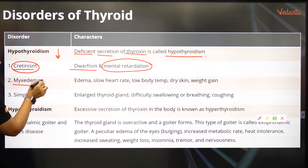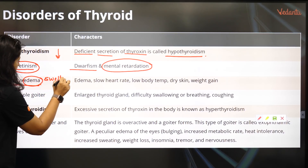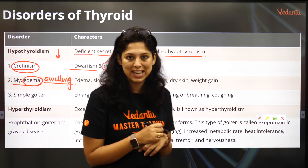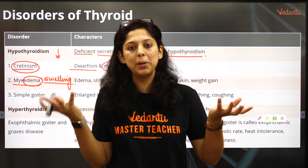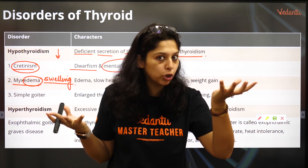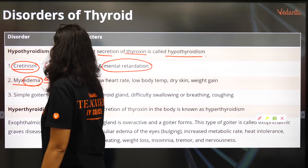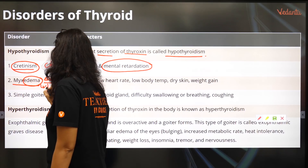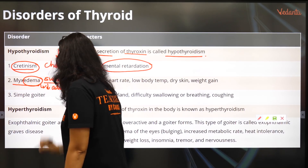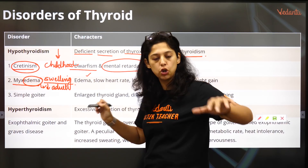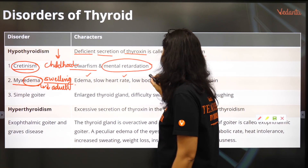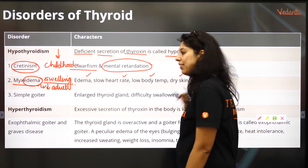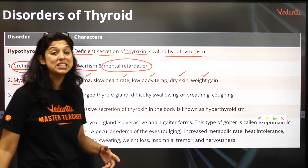Let's come to myxedema. Edema means swelling, so the person looks bulgy. The metabolism of the body is less and the thyroid hormones are less. The main difference between cretinism and myxedema is that cretinism is hypothyroidism during childhood, whereas myxedema is hypothyroidism during adulthood. There is swelling, edema, slow heart rate, low body temperature — the person keeps feeling cold all the time. The skin becomes dry, there is weight gain, and the person becomes very sluggish.